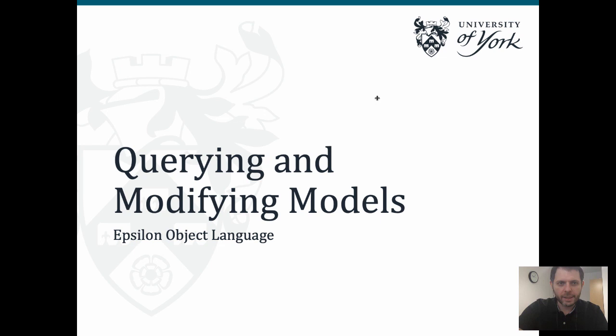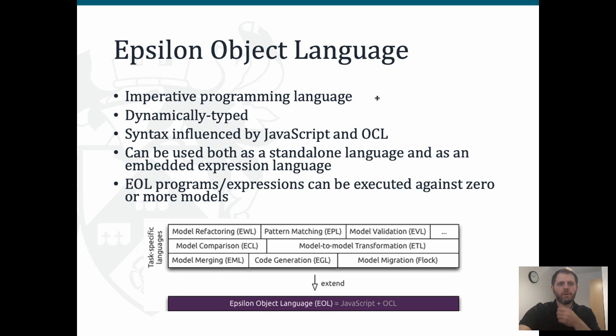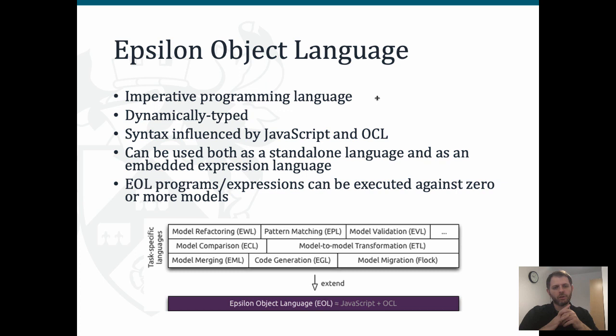Let's start with the core language of Epsilon, EOL, that we can use to query and modify models. EOL is an imperative language, it's dynamically typed, so you shouldn't expect to find features such as code completion. Its syntax has been influenced by two different worlds: the Java/JavaScript world, but also by the OCL world. OCL is a standard constraint language standardized by the Object Management Group, and it offers quite convenient features for navigating collections that we have inherited and adopted in EOL.